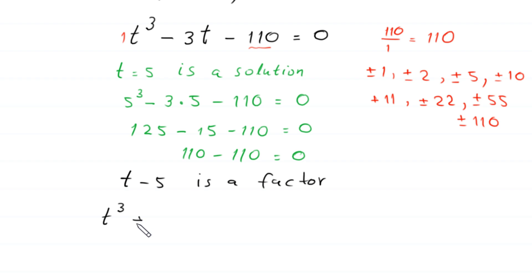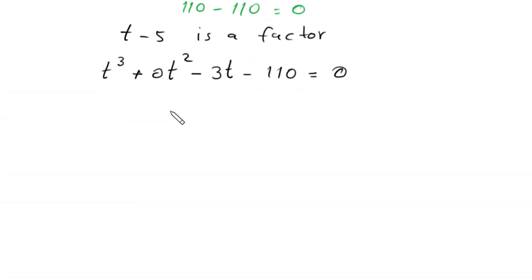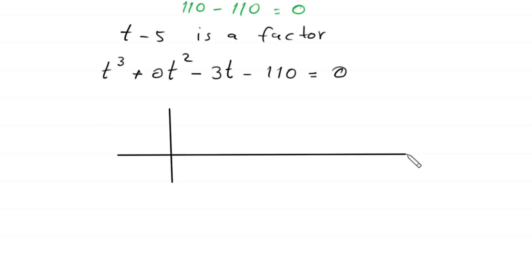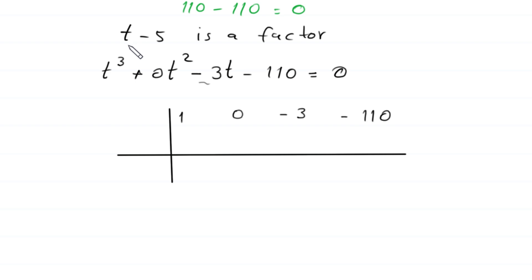We rewrite the equation as t³ + 0t² − 3t − 110 = 0 and use synthetic division. We write the coefficients: 1, 0, −3, −110. Since (t − 5) is a factor, we divide by 5.